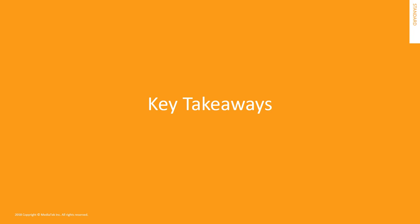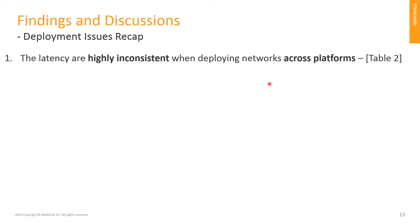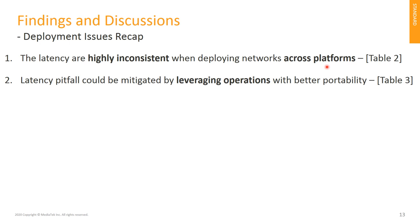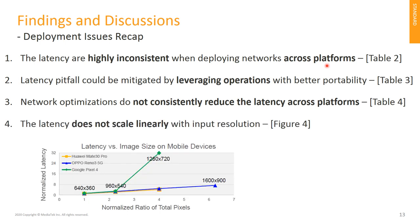In the following pages, I will summarize some important takeaways. Hope it would be helpful to those interested in deploying on mobile devices. Here are the summarized findings everyone should notice when deploying your network. First, the latency is highly inconsistent when deploying across mobile devices. Fortunately, the latency pitfall could be mitigated by leveraging operations with better portability. However, network optimization does not consistently reduce the latency across platforms. Last but not least, the latency does not scale linearly with input resolution.